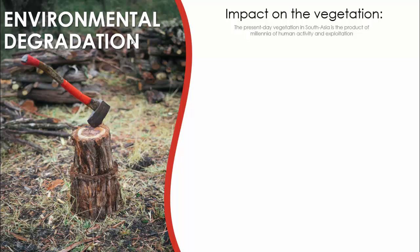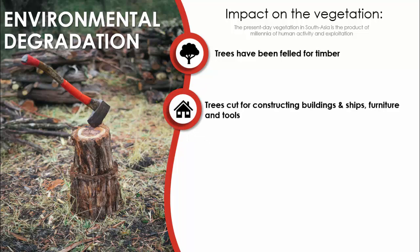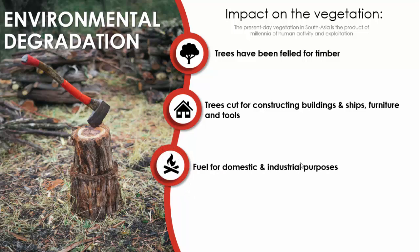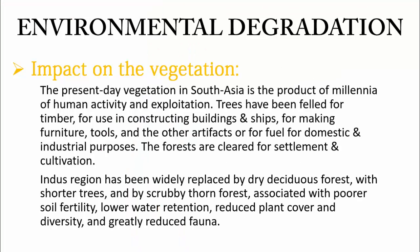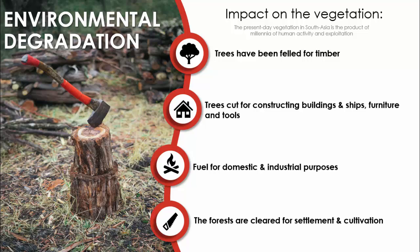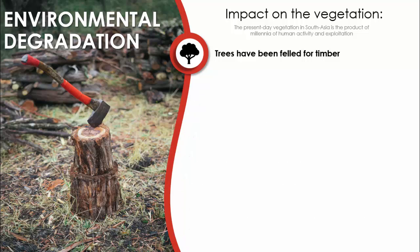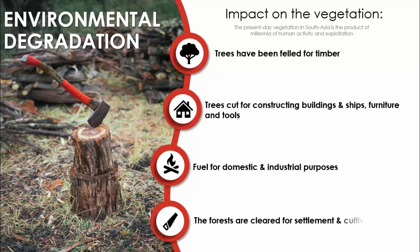I added an environmental degradation image in the background. When clicked, it shows the first point — trees felled for timber — then trees cut for construction of buildings with relevant icons, then fuel for domestic and industrial purposes, and finally forests cleared for settlement and cultivation. As a student or teacher, it's very important to convey the right message in an easy-to-understand way.